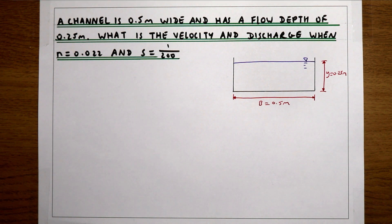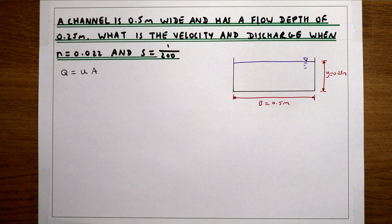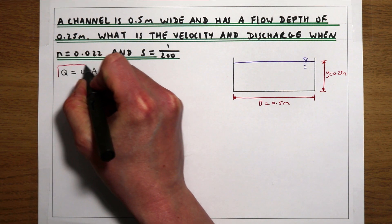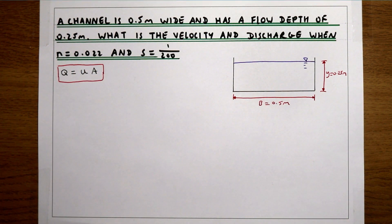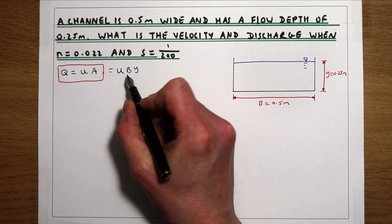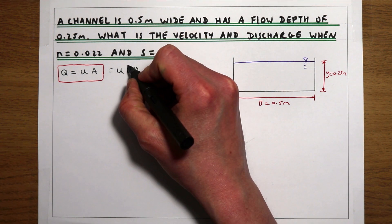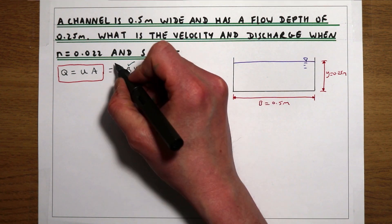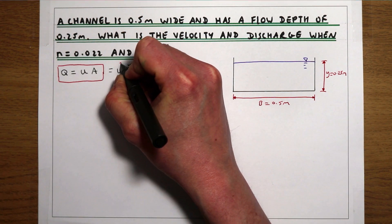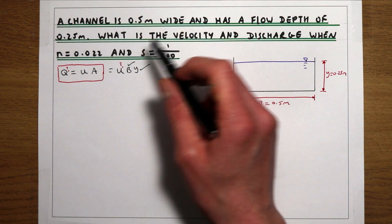Starting with the principle of continuity, we know that the flow rate is equal to the velocity times the area of the fluid. In the context of a rectangular channel, the area is the width times the flow depth. The problem is we have the area but we don't have the velocity or the flow, so we have two unknowns when we try to solve this using the continuity equation alone.